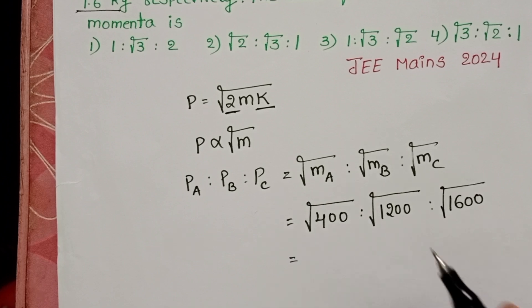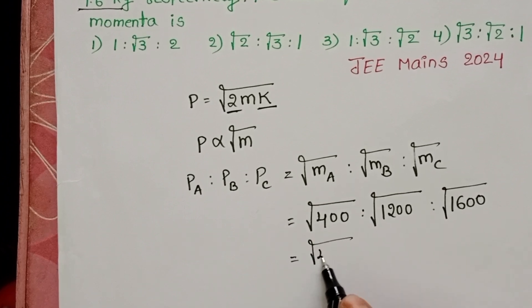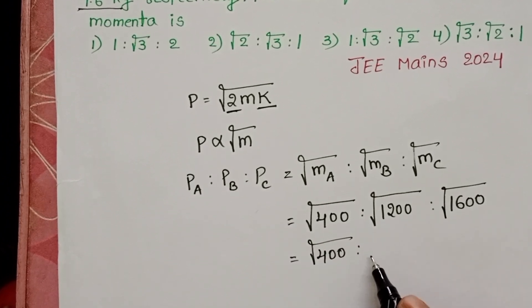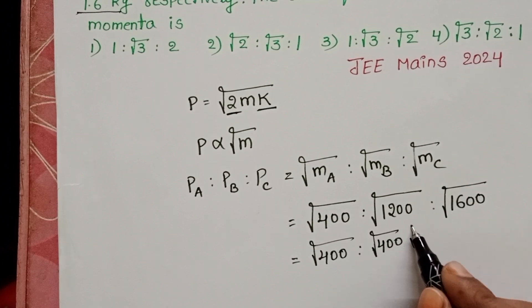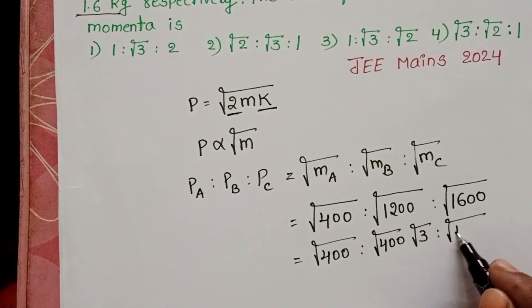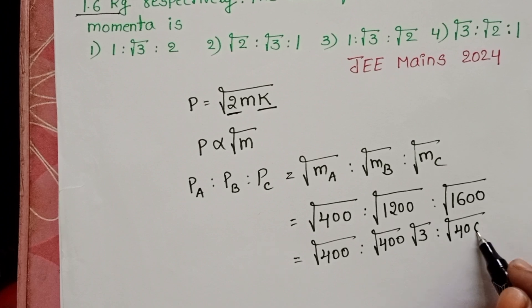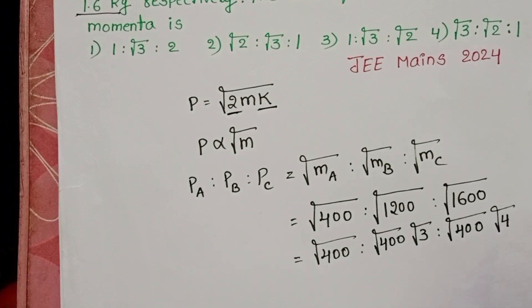Simplify this: square root of 400. Write this 1200 as square root of 400 times square root of 3. Square root of 1600 is square root of 400 times square root of 4.